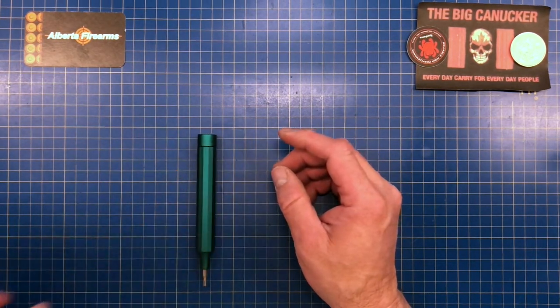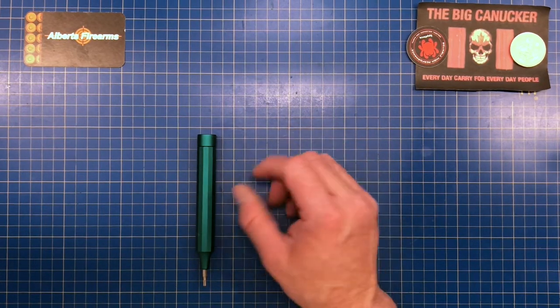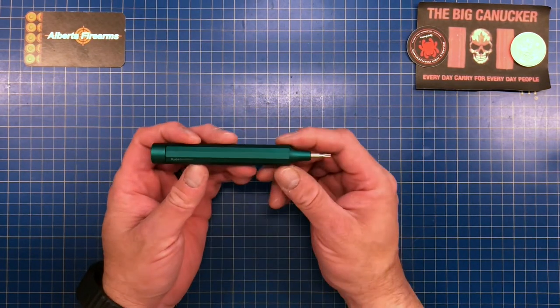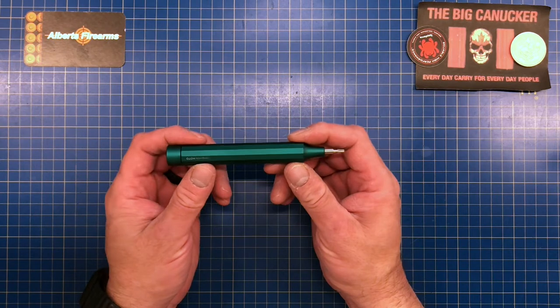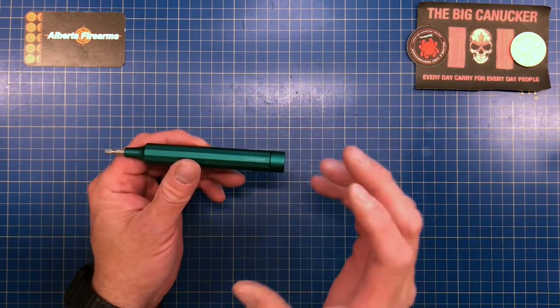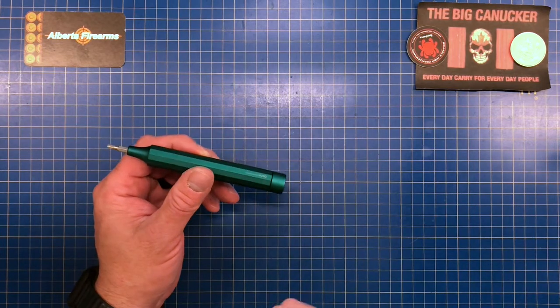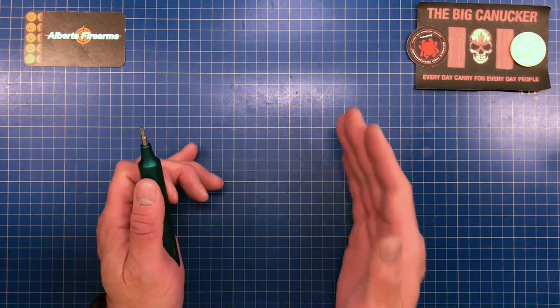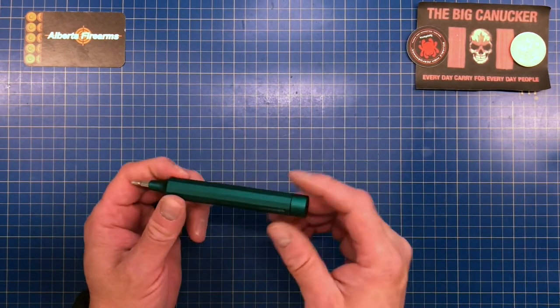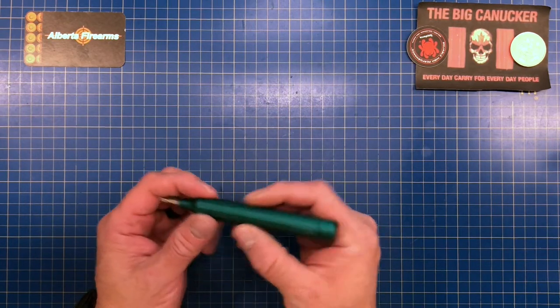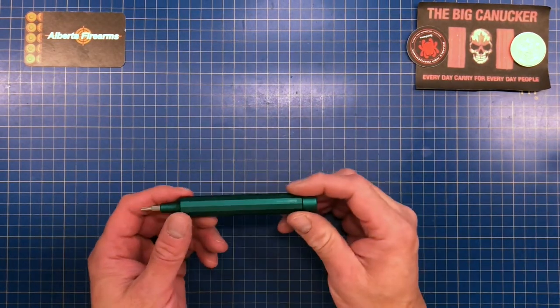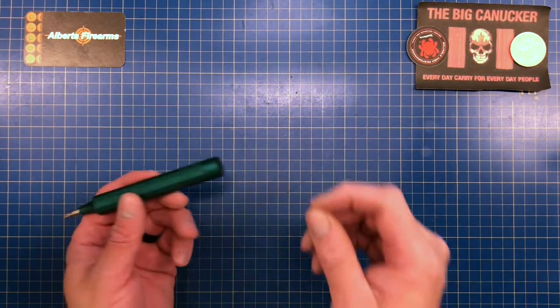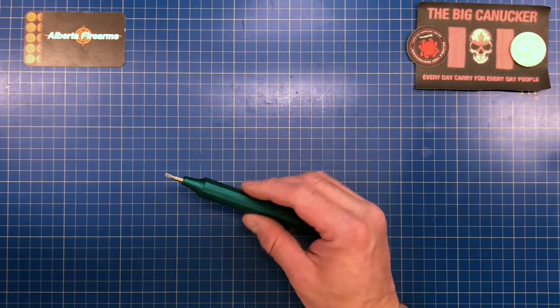Would I buy this again? Absolutely. If this tool happens to go missing, Papa Bear Big Canucker is going to get himself another one. I think they're excellent. I may also look at trying—Hoto not only makes these 24-in-1 precision, they make little kits with whole different bits in them. They also make some small electric screwdrivers as well. I think if I'm going to be getting into maybe some total knife modding and things like that, I might want to invest in that little electric one just to have.